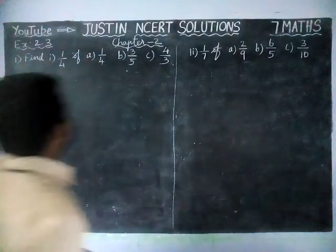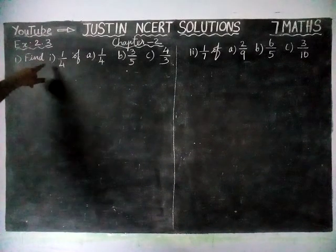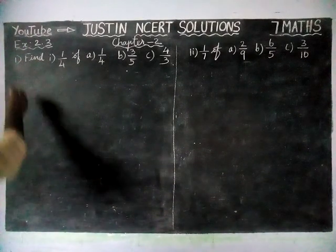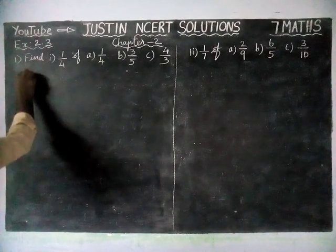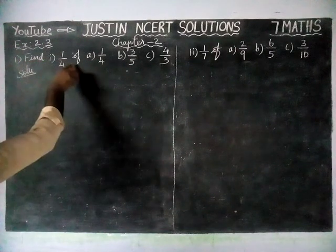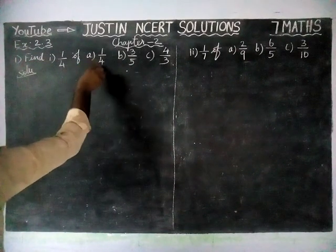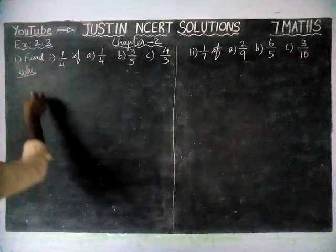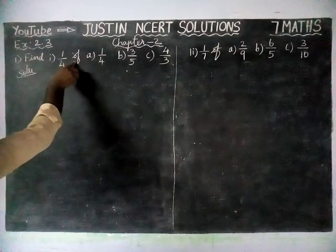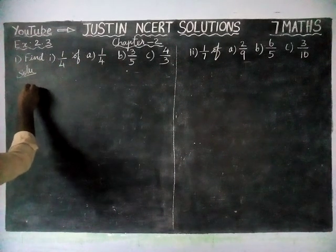Here, the first sum, first Roman numeral: 1/4 of option A, 1/4 — we are going to check it. The meaning of 'of' is equal to multiplication; we have to find the product.